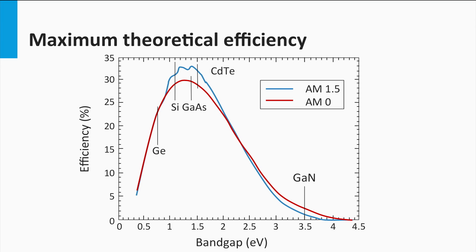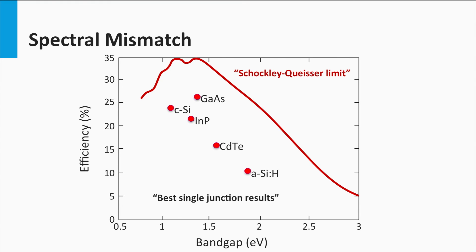The Shockley-Queisser limit shows an optimum of 33% for band gaps in the range of 1 eV up to 1.5 eV. For single junction solar cells, semiconductor materials such as silicon, gallium arsenide, and cadmium telluride have an optimum band gap. However, if we look at the record efficiencies of solar cells, they are all below the Shockley-Queisser limit. The reason is that additional optical losses like reflection and parasitic absorption, and electrical losses like Shockley-Reed-Hall and Auger recombination, are not considered — the Shockley-Queisser limit only considers radiative recombination. Therefore, its efficiency limit is most valid for direct band gap materials like gallium arsenide, where radiative recombination is the limiting recombination mechanism for the open-circuit voltage.